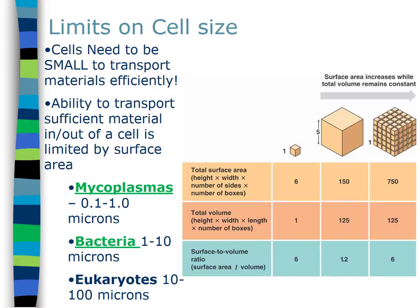Cells also need to move materials in — nutrients, food, oxygen — and get waste products out — nitrogenous waste, CO2, and so on. The cell membrane is basically a door. The more surface area you have per unit volume, the more doors you have. A small cell with unit length of one has a surface area of 6 (six sides × 1×1) and a volume of 1, giving a surface area to volume ratio of 6:1.